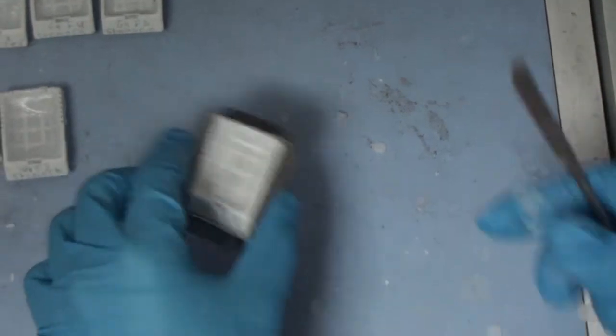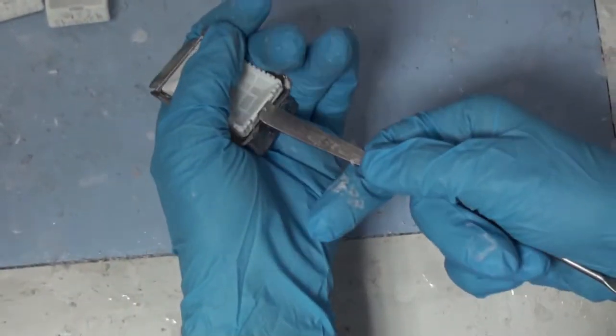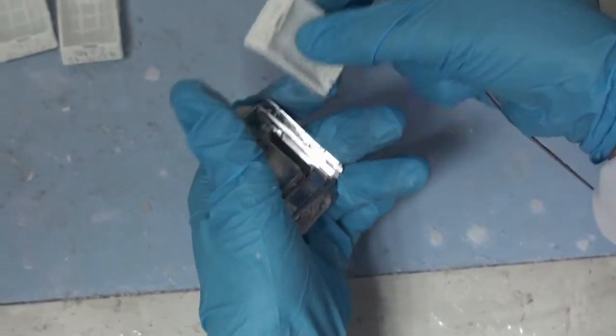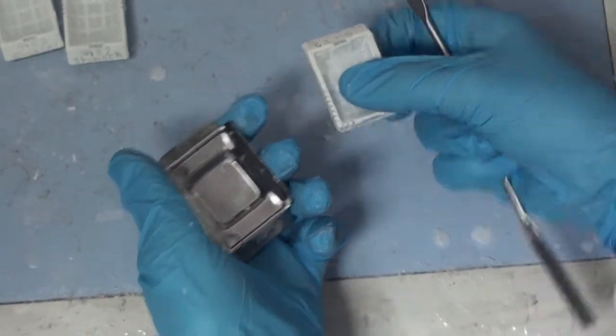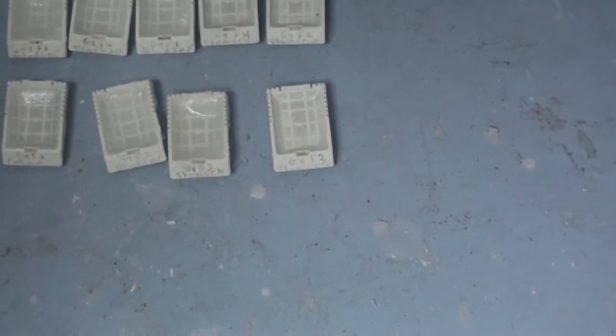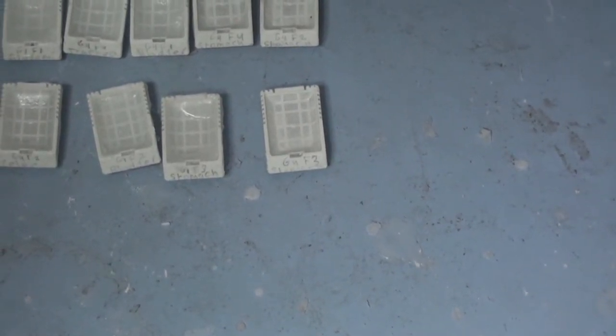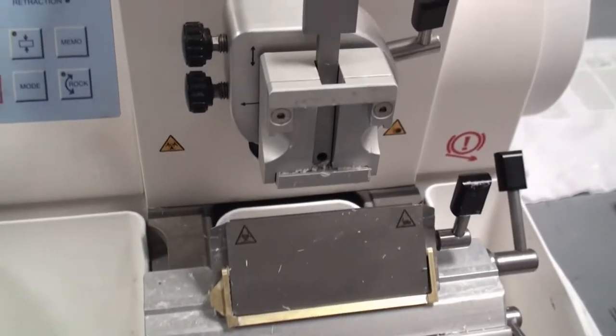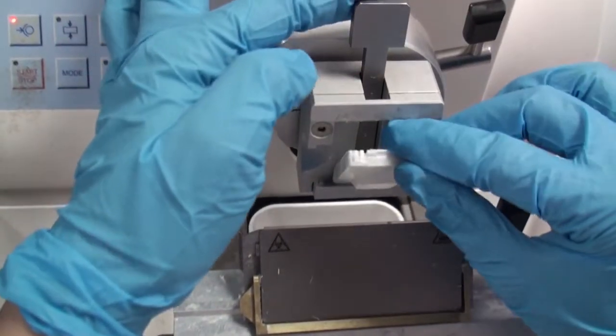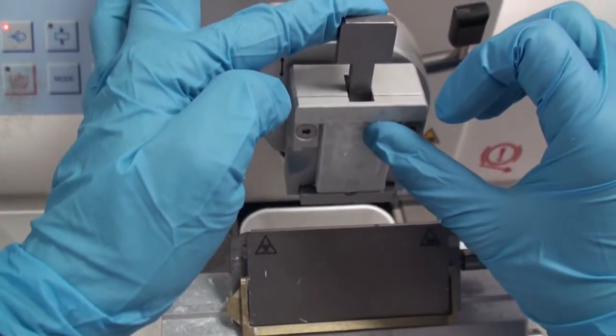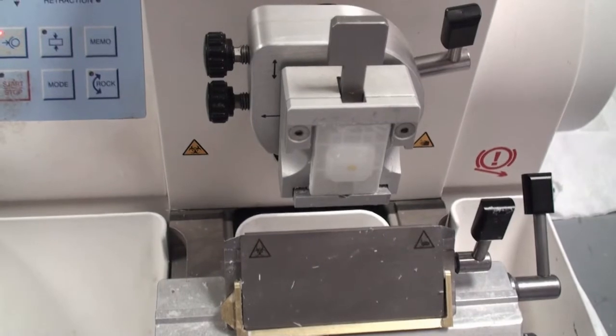After the wax has completely solidified, we will remove our cassette from the mold. And put the cassette with the specimen back on our ice station. So it completely solidifies before we start our sectioning step. We will place our block. So we can start the sectioning, or the cutting.